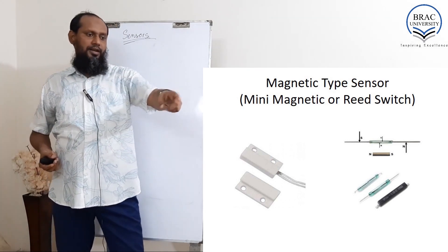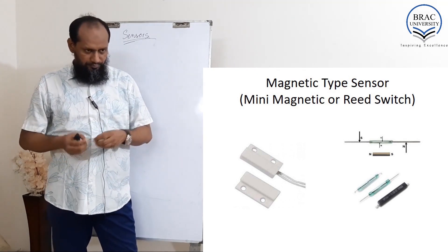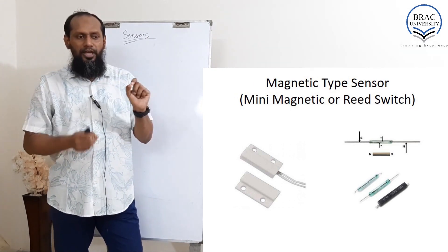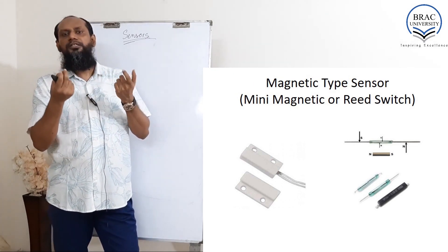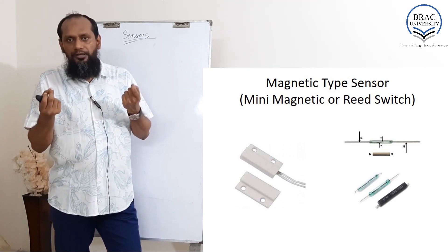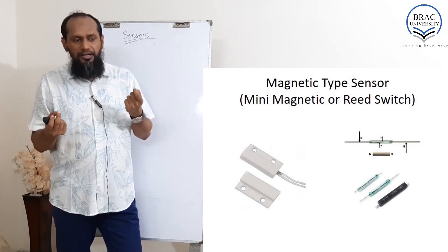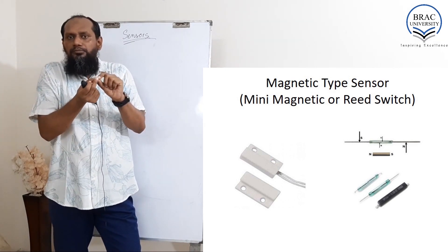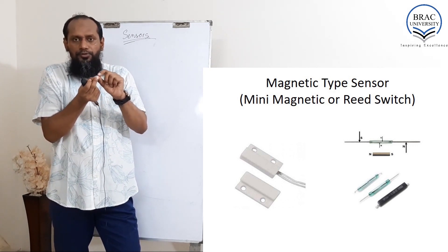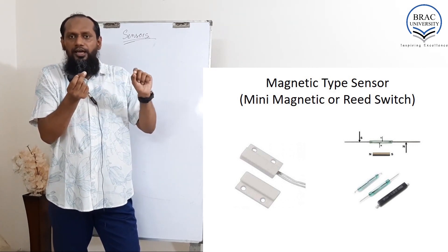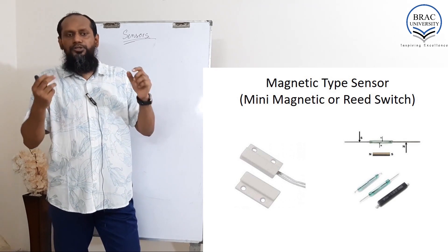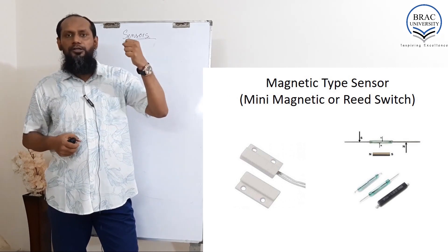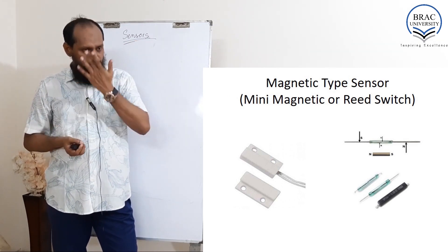On the left side there is a pair: in one part there is a permanent magnet, and in the other part there is just a reed switch that has magnet-sensitive material. When the magnet comes near to the second part, the switch turns on — it gets short. If you move it aside, it turns off. A number of applications use this kind of sensor, such as in door or cupboard doors.